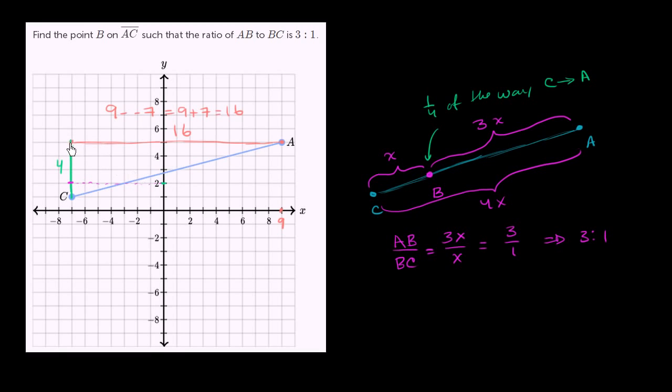And if we go 1/4 in the horizontal direction, 1/4 of 16 is 4. So we go 1, 2, 3, 4. So we end up right over here. Our x is negative 3. So we end up at that point right over there. This is the point negative 3 comma 2.